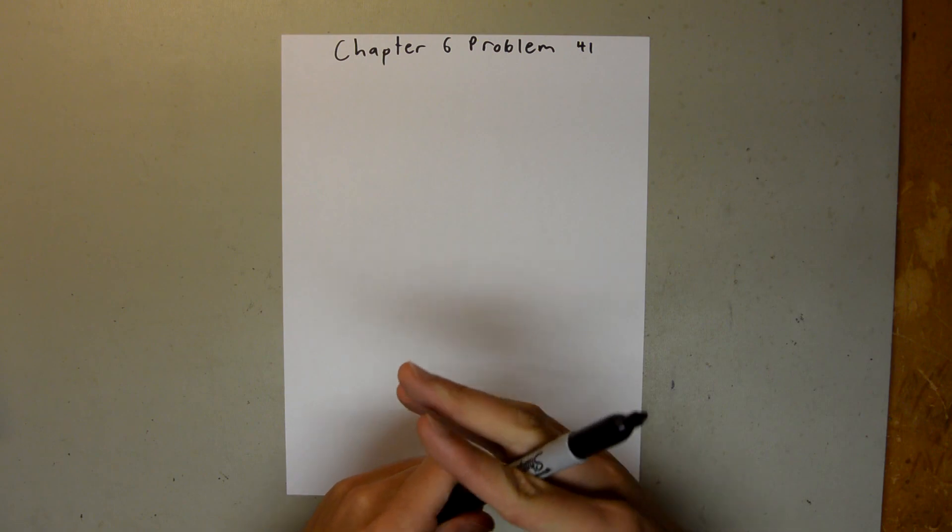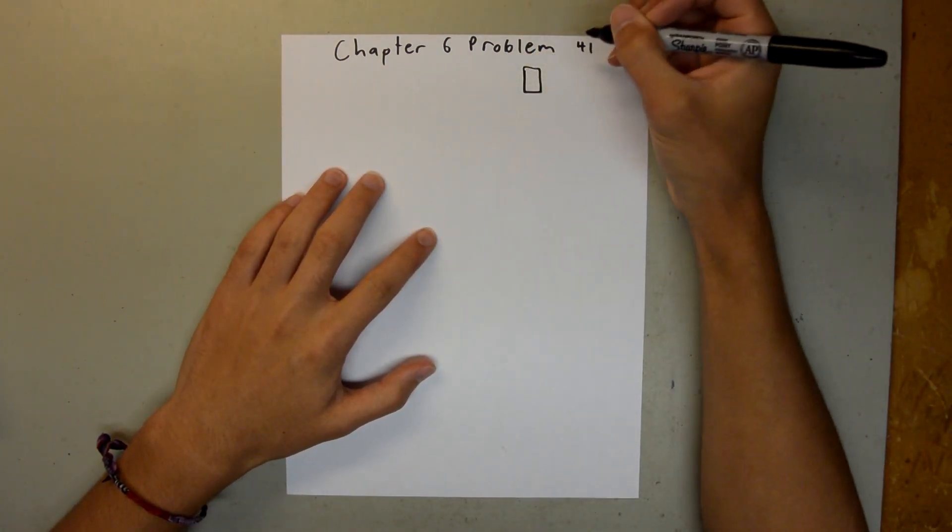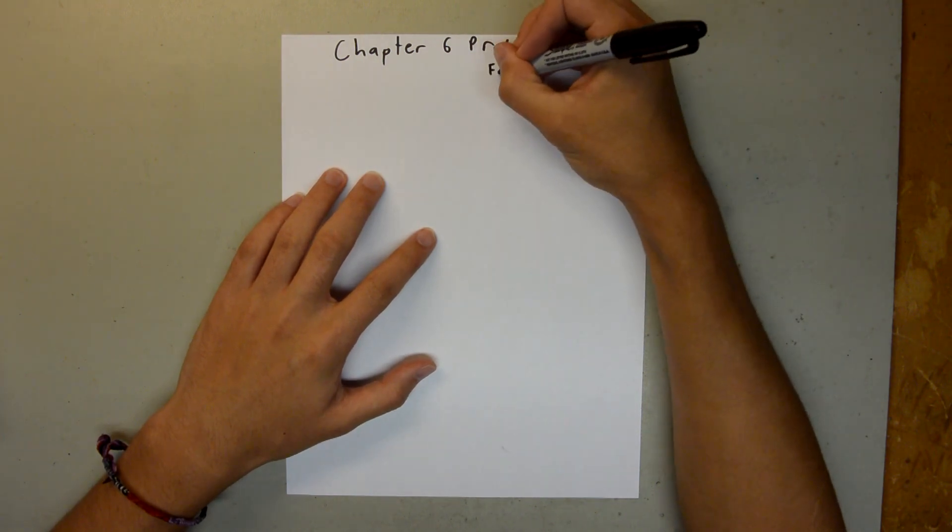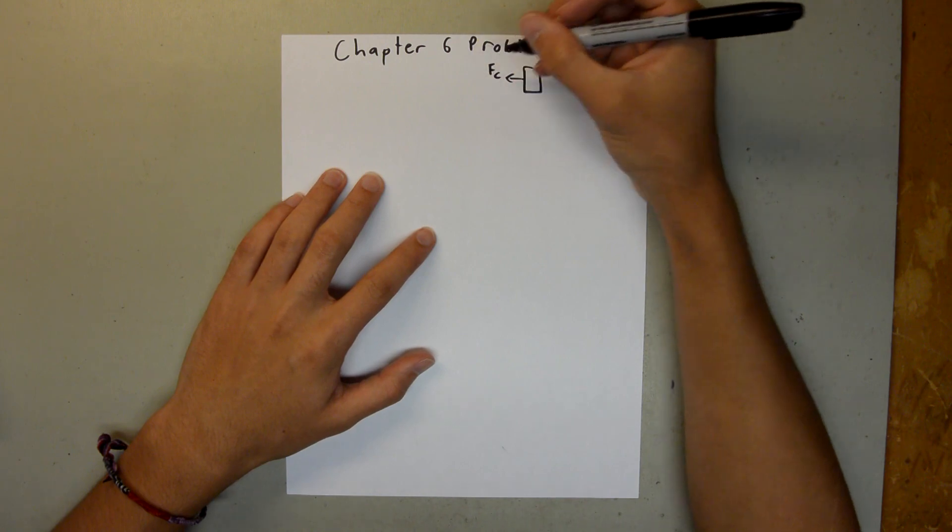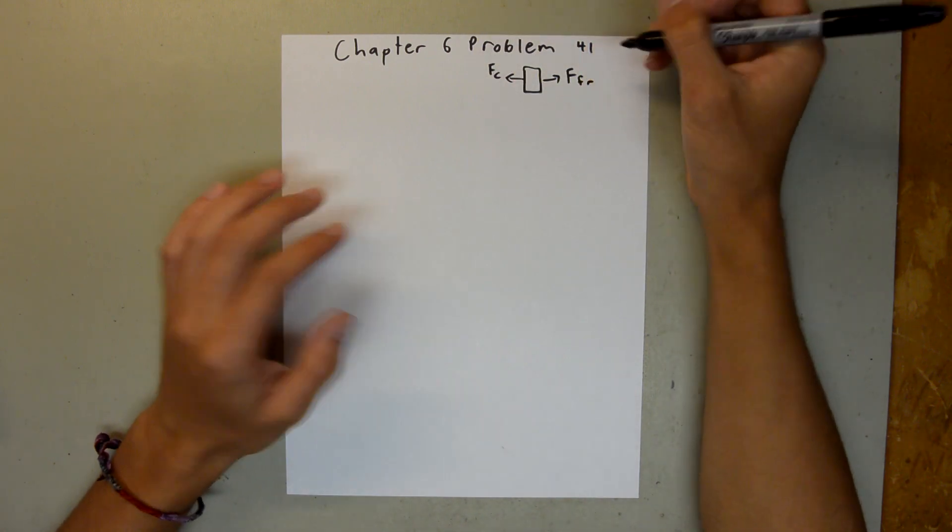So, first off, I just want to draw a very basic picture. If this is our bicycle rider, we're going to have the centripetal force toward the inside of the loop, and we're going to have the force of friction on the other side.